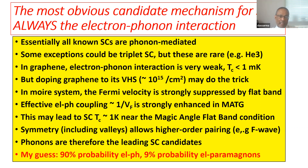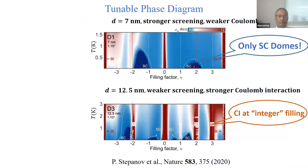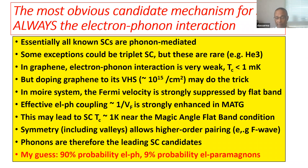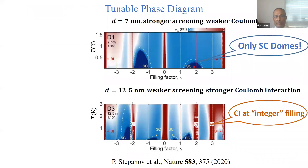As I'll show you, the symmetry of the system — because it has valley, sublattice, and spin — allows phonons to give rise to higher-order symmetry pairing. Normally you expect phonons to give you S-wave superconductivity, but here that's not true. So phonons are the leading superconducting candidate even in this system, and phonons must be ruled out before you talk about anything else. My guess — and I'll put my money where my mouth is — is that there is a 90% probability that electron-phonon interaction is causing superconductivity in all these systems, 9% probability electron paramagnon, and 1% everything else.